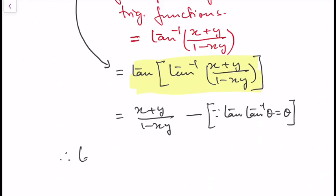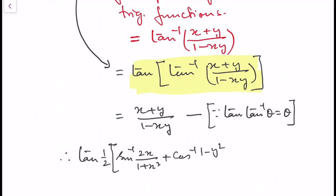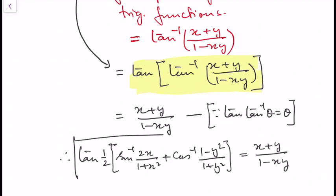Therefore, tan(1/2 · sin⁻¹(2x/(1+x²)) + cos⁻¹((1−y²)/(1+y²))) = (x+y)/(1−xy).